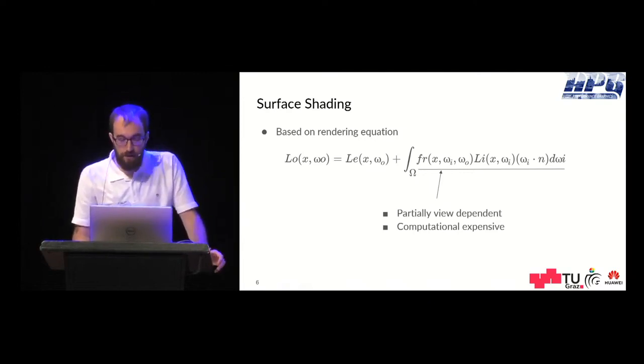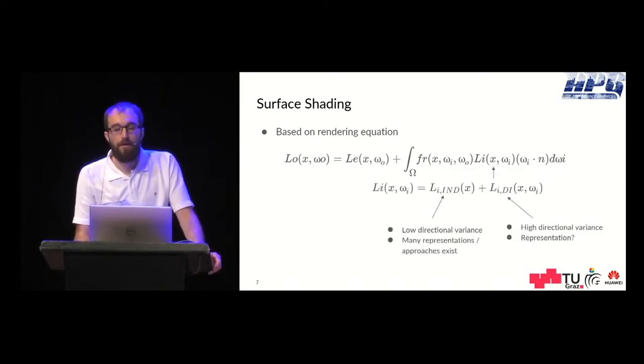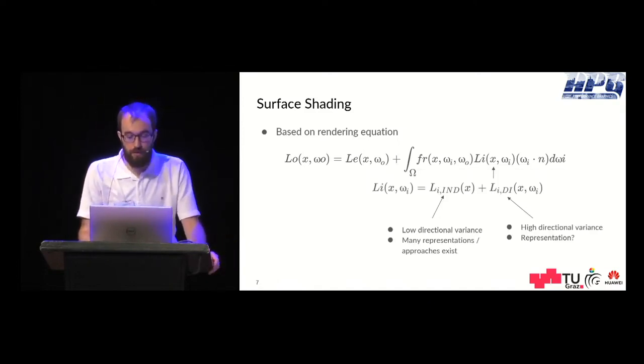In there is the BRDF which is of course view dependent, which is multiplied by the illumination and the cosine. The thing here we want to reuse is the illumination, and when we look at it in more detail then we can split up the illumination into a direct part and an indirect part.